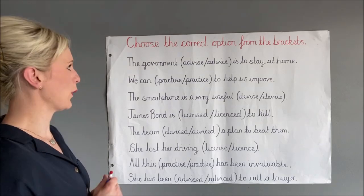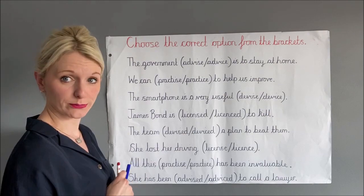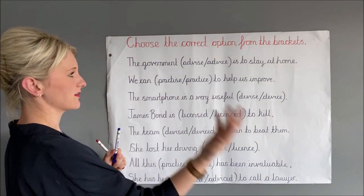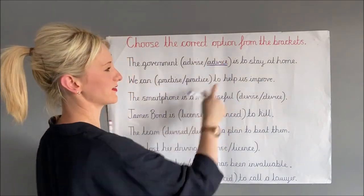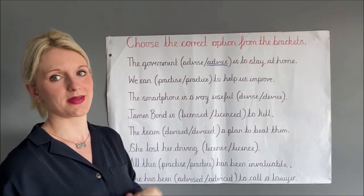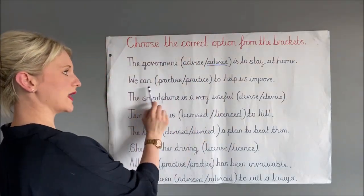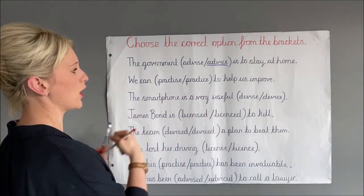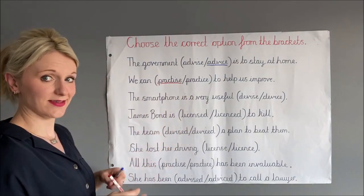Let's look at what we should have had. The first sentence: 'the government advice is to stay at home.' It is something that the government is giving — advice is a thing — so it should have the CE ending. If I said 'the government advised us to stay home,' then it would have been an SED ending. Next: 'we can practise to help us improve.' Practise is something that we are doing — it is being used as a verb — so it should have the SE ending.